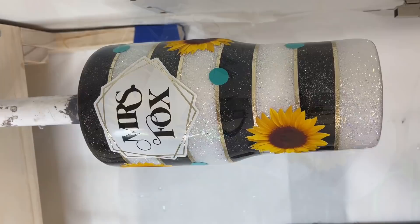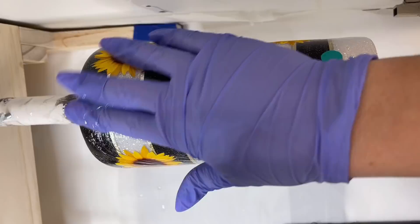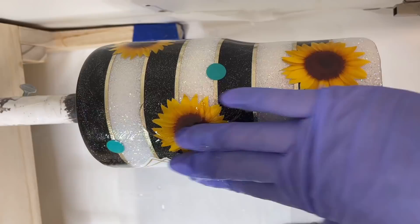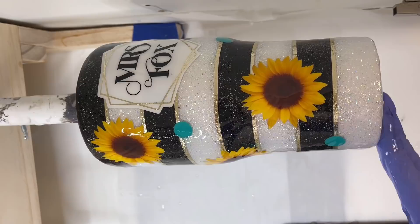We're just going to epoxy right over this. You do not need to seal printable vinyl. I get asked this every single time I use printable vinyl in a tutorial and you do not need to seal it. You could just apply epoxy right over it.